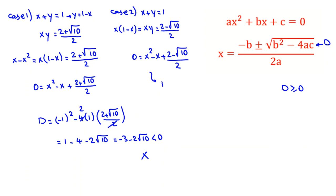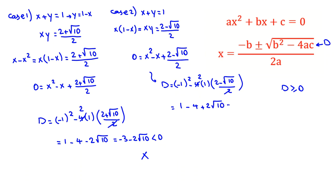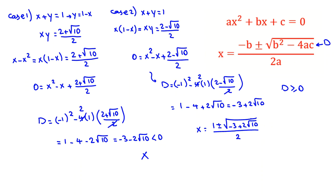In case 2, the discriminant equals negative 1 squared minus 4 times 1 times c, where c is 2 minus root 10 over 2. This gives 1 minus 4 plus 2 root 10, equaling negative 3 plus 2 root 10. So x equals negative b plus or minus square root of the discriminant, all over 2a: x equals 1 plus or minus square root of negative 3 plus 2 root 10, all over 2.